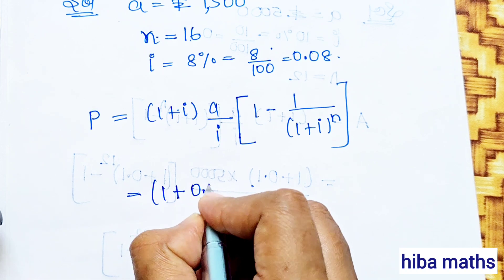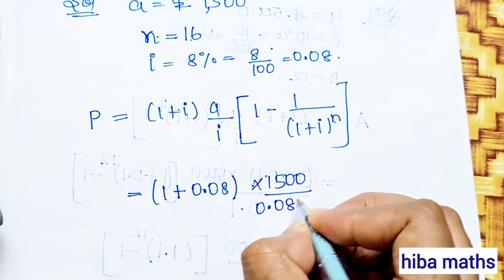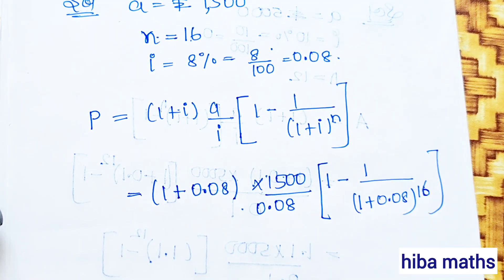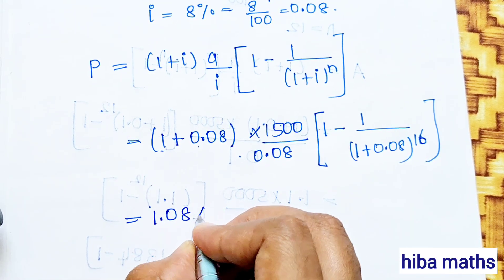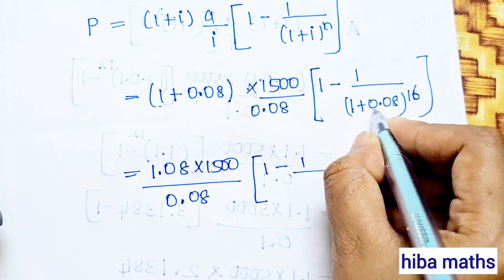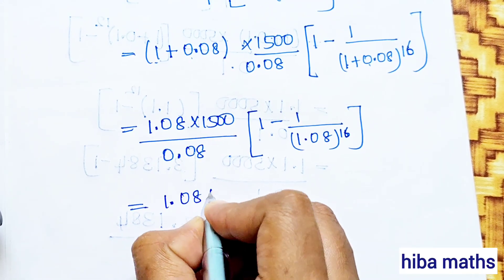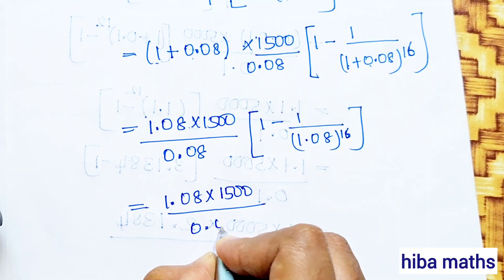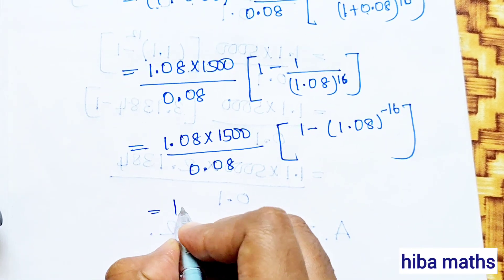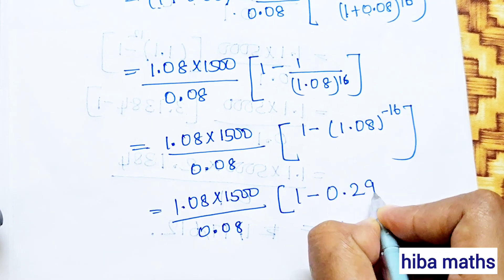Substituting: 1 plus i value 0.08, a value 1,500, divided by i value 0.08, into 1 minus 1 by (1 plus 0.08) power 16. This equals 1.08 into 1,500 divided by 0.08 into 1 minus 1 by 1.08 power 16, which is 1.08 into 1,500 divided by 0.08 into 1 minus 0.2919, giving 1.08 into 1,500 divided by 0.08 into 0.7081.